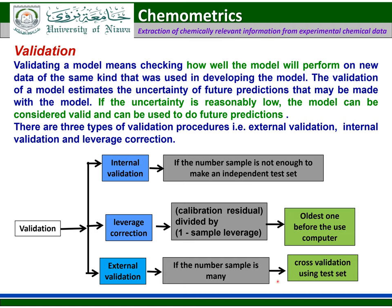In the external validation method, we separate an independent set of samples called the test set, and the calibration model is validated with the help of that test set. If the number of samples is not many, then we use internal validation. The leverage correction is the oldest type of validation and nowadays it is not commonly used.